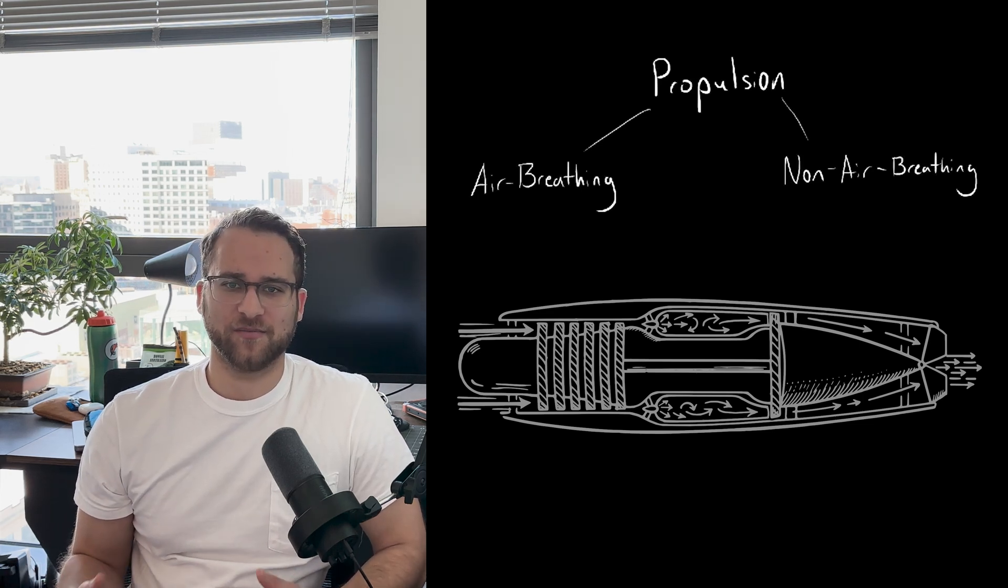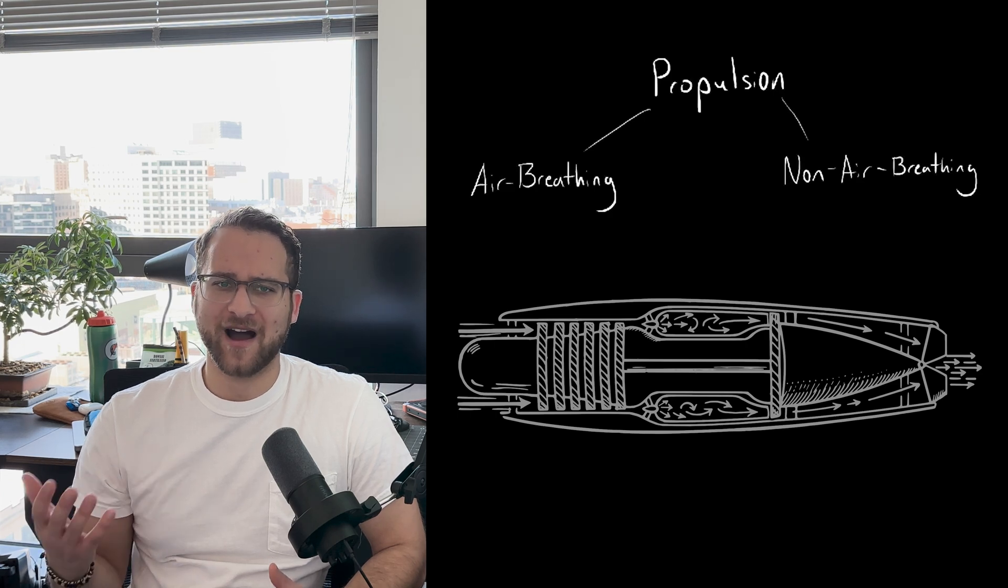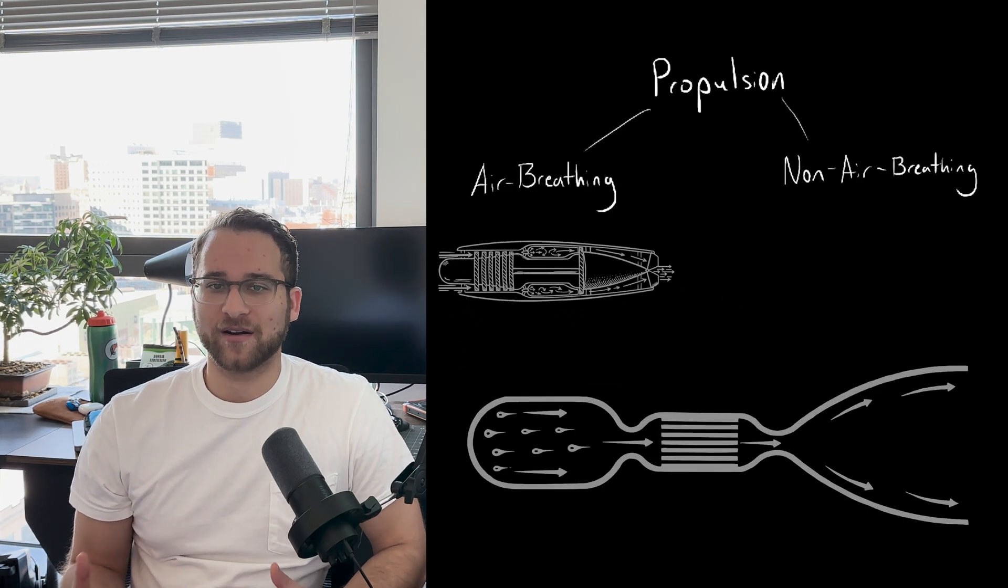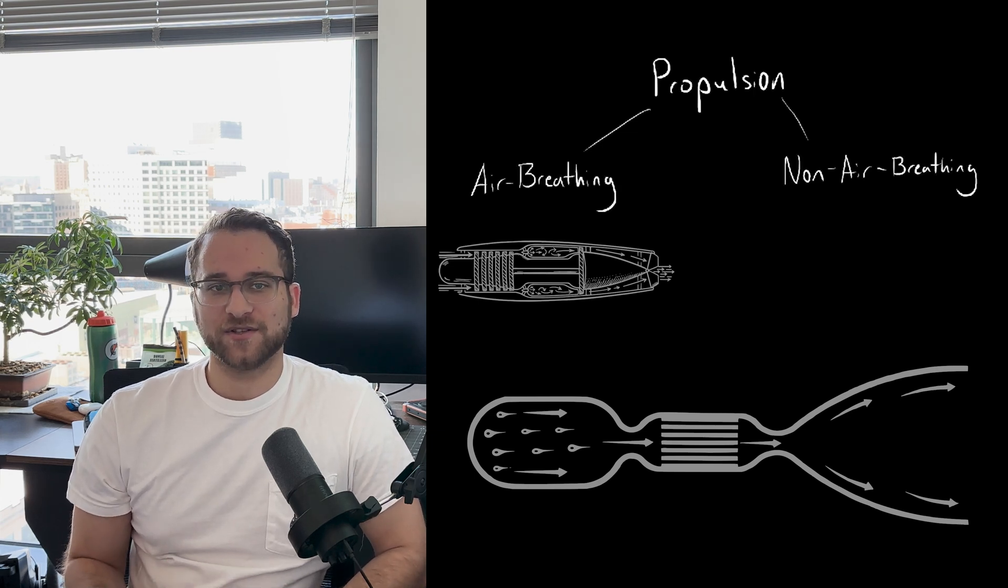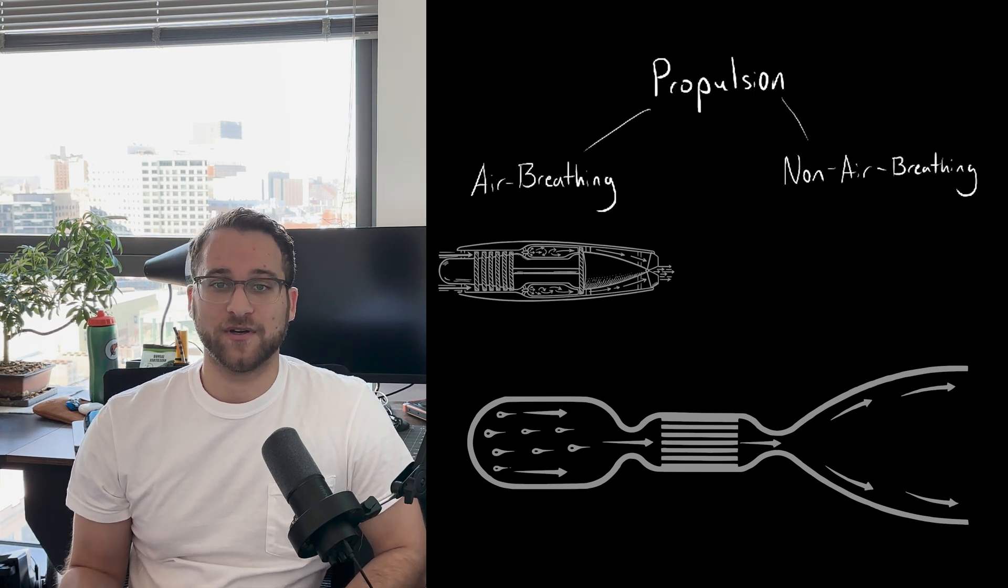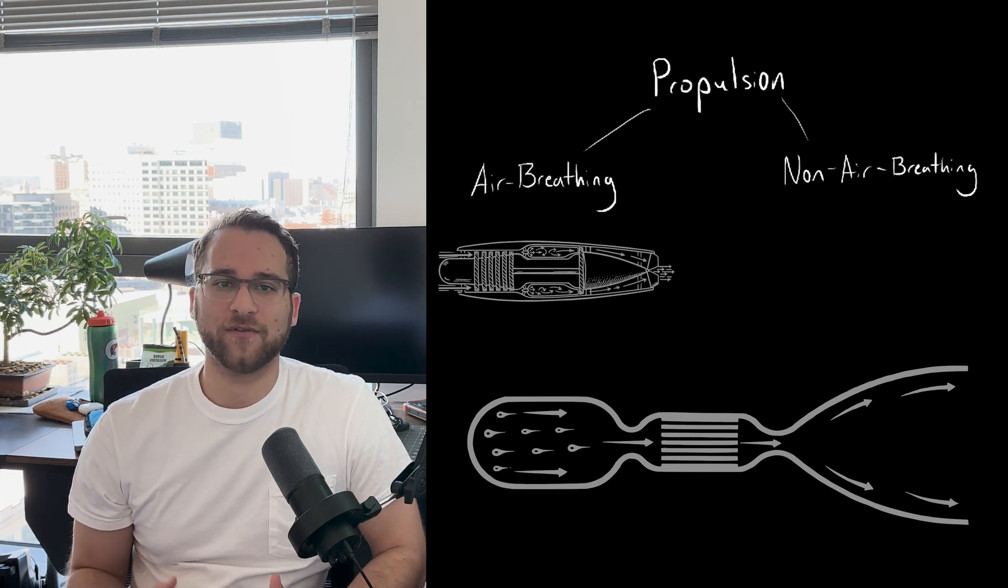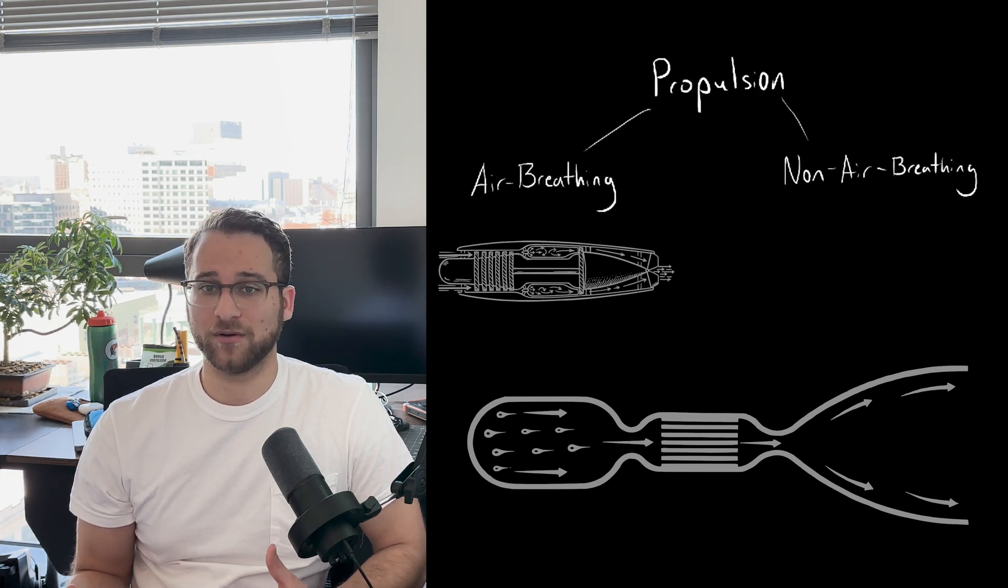Modern aircraft engines can compress the atmosphere enough to get pretty high and travel quite fast, but to reach orbit, non-air-breathing engines are needed. These engines carry their own oxygen for combustion, which enables high thrust, but they're less efficient, meaning more of the weight of the vehicle needs to be fuel and oxidizer.